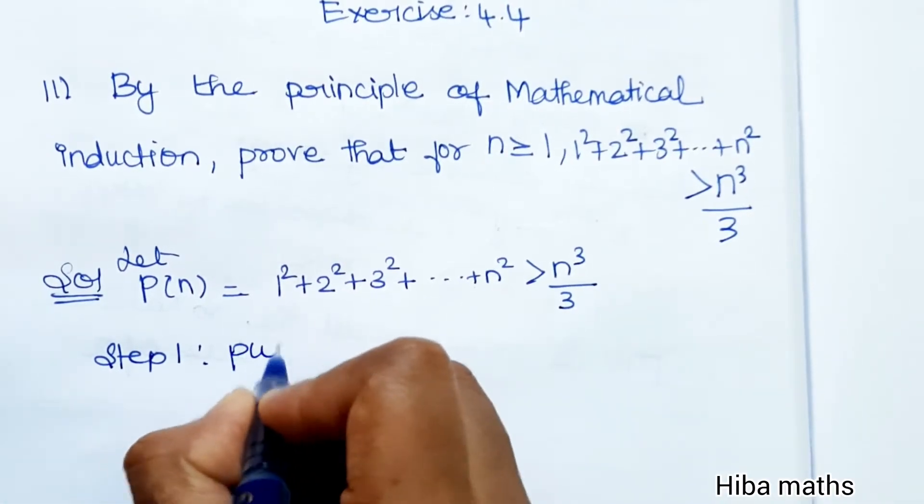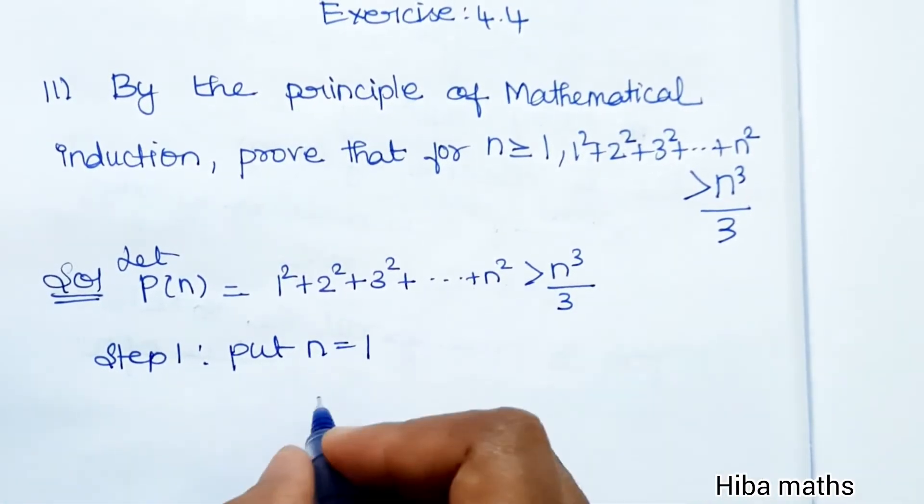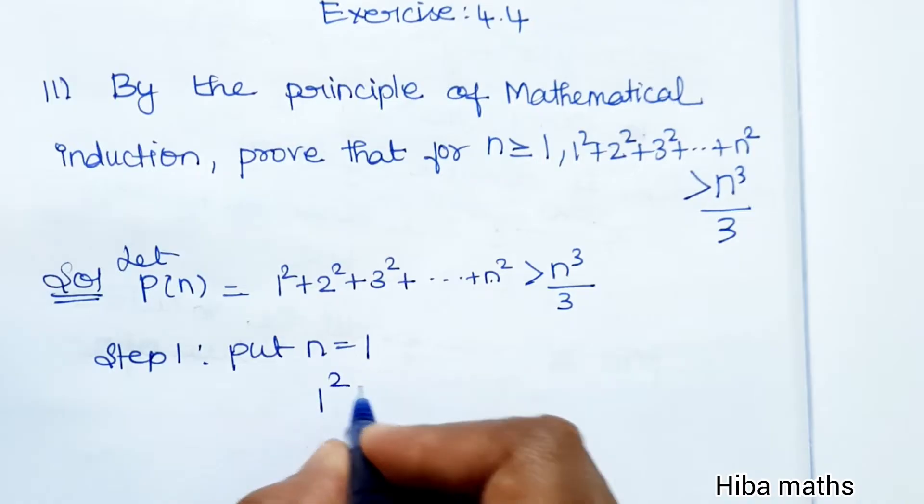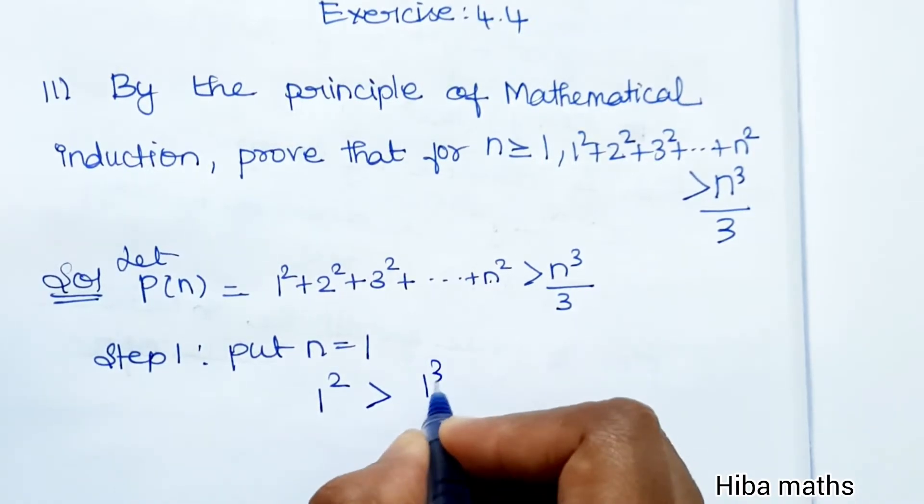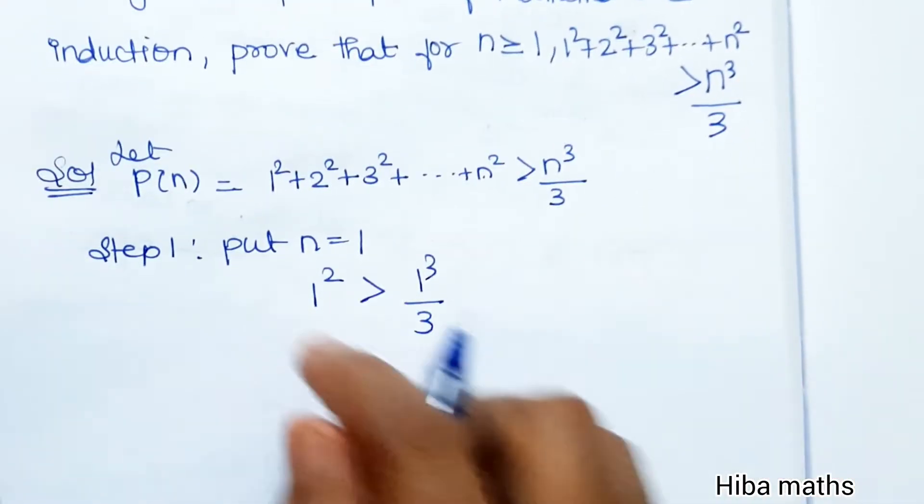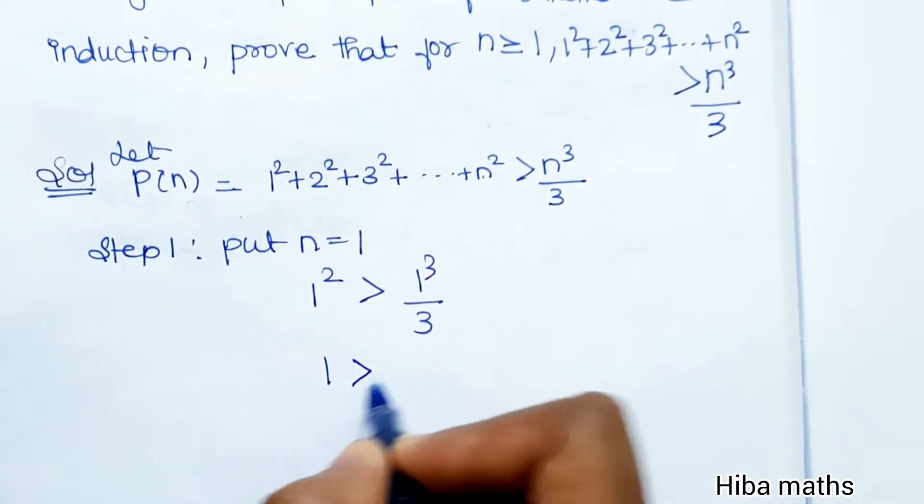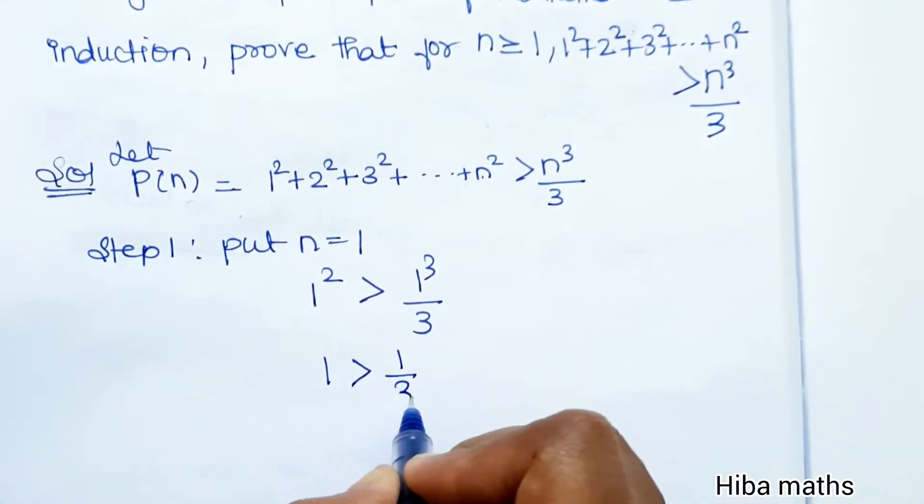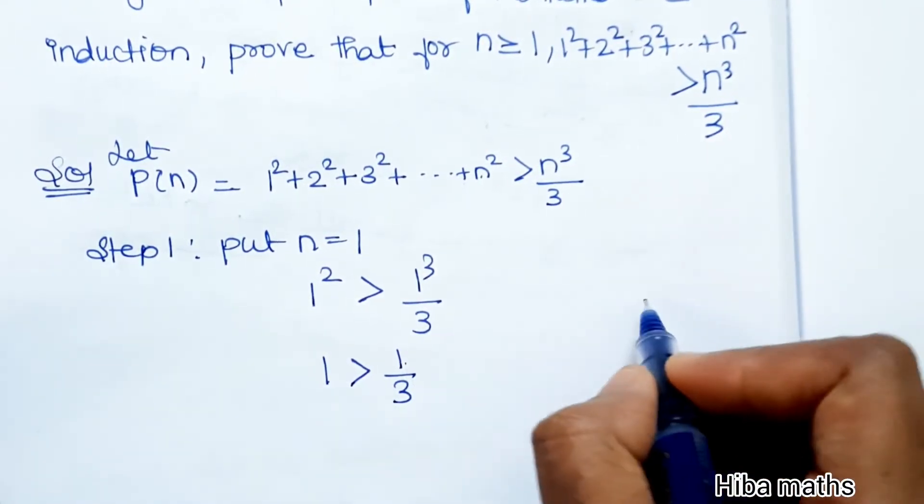Step 1: Substitute n = 1. So 1² > 1³/3, which means 1 > 1/3. This is correct, since 1 is greater than 1/3.